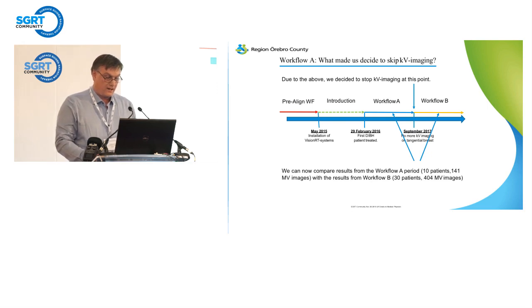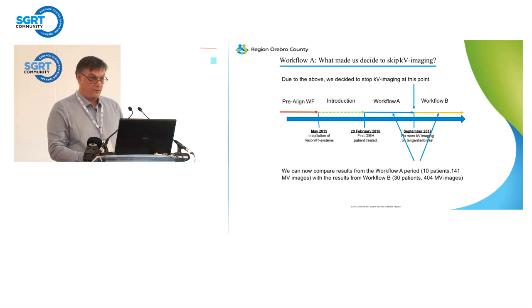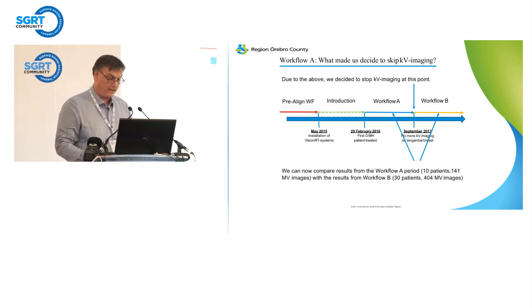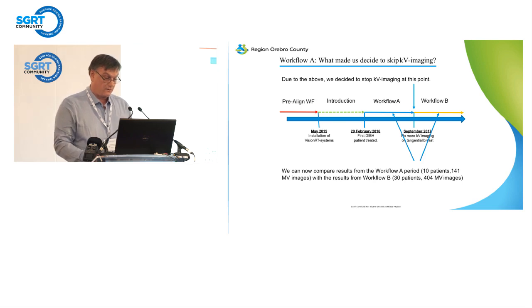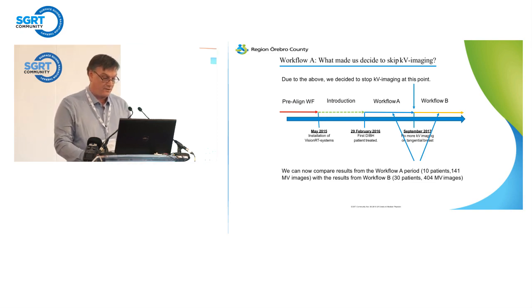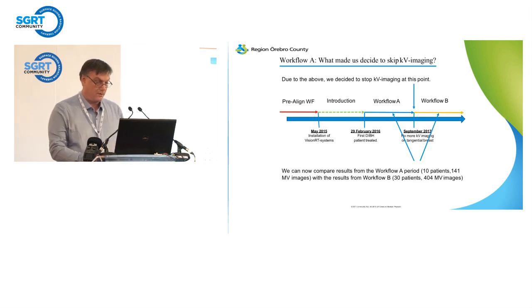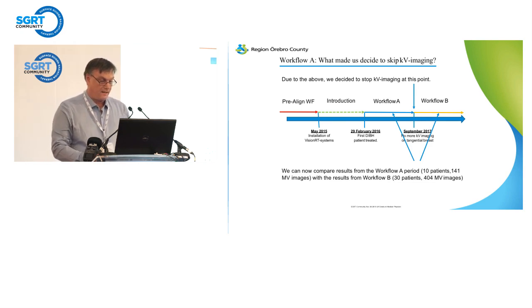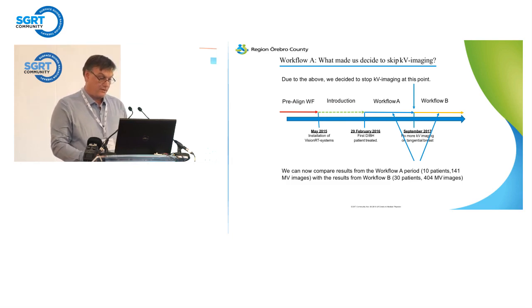So at a certain point in time, in September 2016, we stopped doing these couch shifts and KV matches. What we then wanted to do was evaluate how this worked out. We can now compare the results from the two workflows: workflow A with both AlignRT and KV imaging — 10 patients and 140 images — versus workflow B with only AlignRT — 30 patients and 400 images.